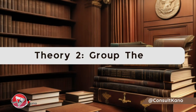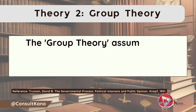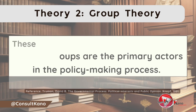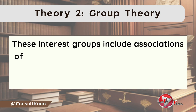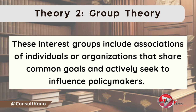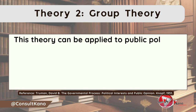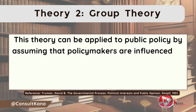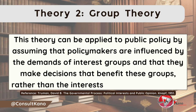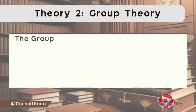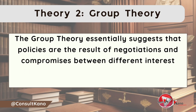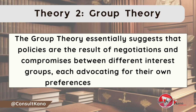The next public policy theory we'll be discussing is the group theory. The group theory assumes that interest groups are the primary actors in the policy-making process. These interest groups include associations of individuals or organizations that share common goals and actively seek to influence policy-makers. This theory can be applied to public policy by assuming that policy-makers are influenced by the demands of interest groups, and that they make decisions that benefit these groups rather than the interests of the general public. The group theory essentially suggests that policies are the result of negotiations and compromises between different interest groups, each advocating for their own preferences and objectives.